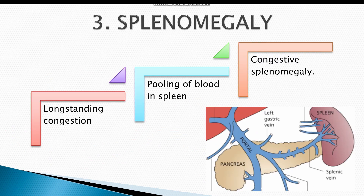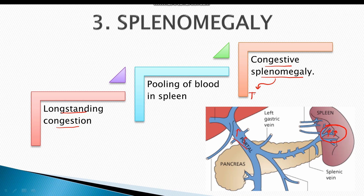Portal hypertension can also result in congestive splenomegaly. Due to long-standing congestion from pooling of blood, blood also pools inside the spleen, resulting in congestive enlargement known as splenomegaly. Congestion of blood inside the spleen causes sequestration of blood components, resulting in thrombocytopenia — deficiency of platelets — and more dangerously pancytopenia, which is deficiency of all blood components including white blood cells, red blood cells, and platelets.